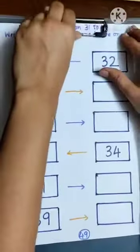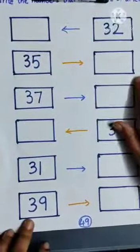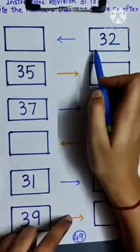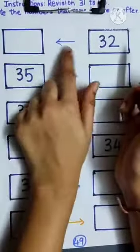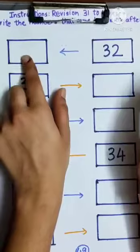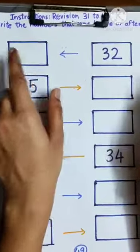We have to write a number which comes before or we have to write a number which comes after. And we have number 32 and the arrow is pointing towards this side. So we are going to write the number which comes before 32.